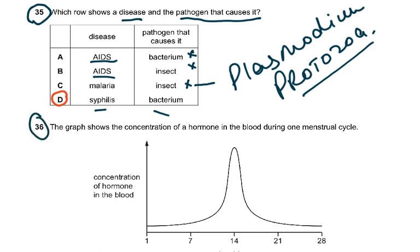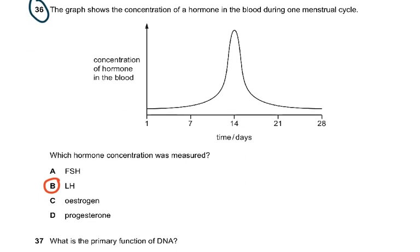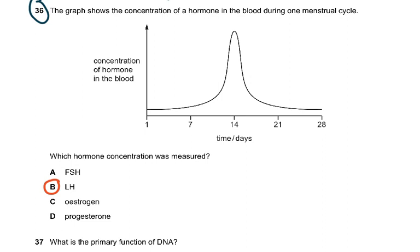Question 36: The graph shows the concentration of hormone in the blood during one menstrual cycle. The hormone that rises on day 14 is LH — the luteinizing hormone — because ovulation takes place and the corpus luteum is formed. So B was correct. You need to revise the graph for the menstrual cycle if you are not clear on this.